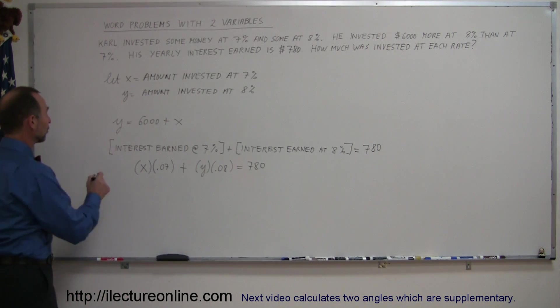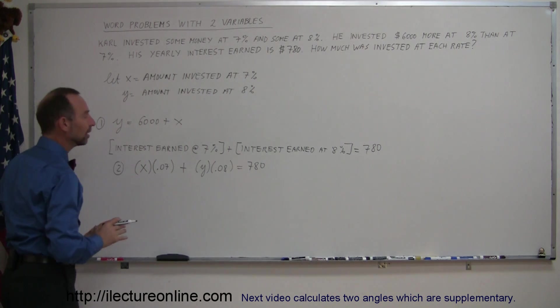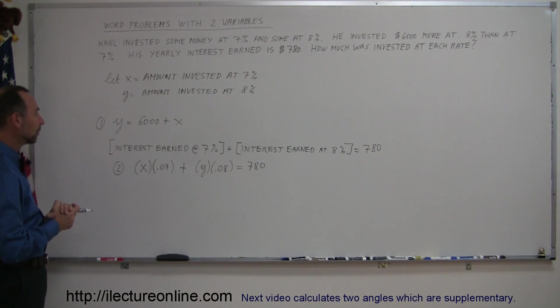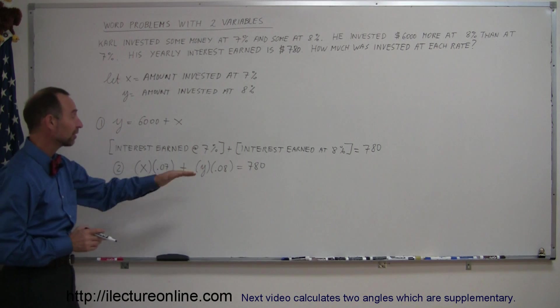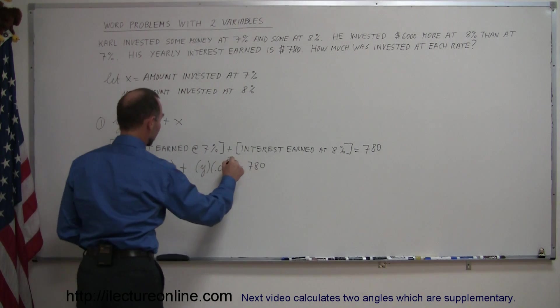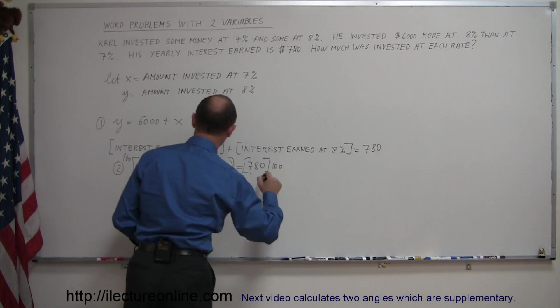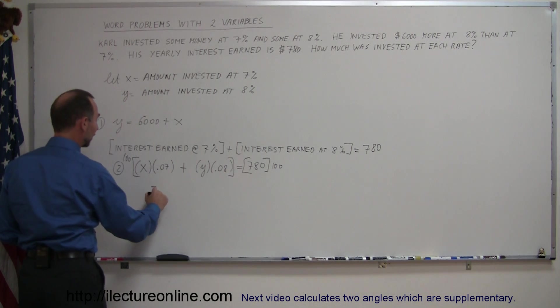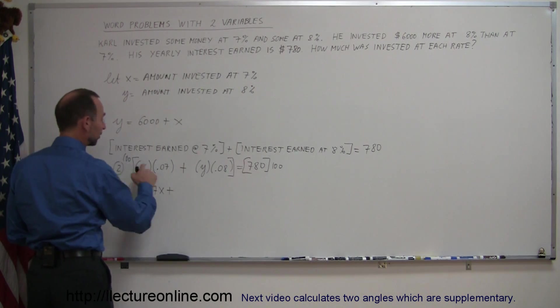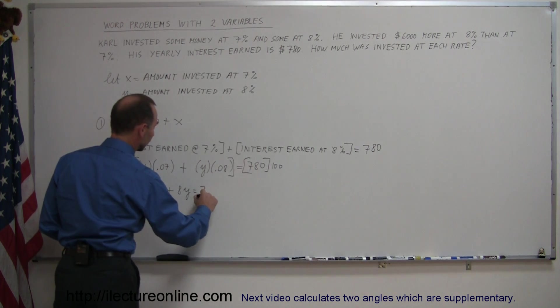So now I have two equations: equation number 1 and equation number 2, and I can solve those simultaneously to find the answer. Before I do anything with equation number 2, I would like to get rid of the decimal places. I'm going to multiply both sides of the equation by 100 to get rid of those decimal places. So we can say that 100 times 0.07 is 7, so 7x, plus 100 times 0.08 is 8, so plus 8y equals this with two more zeros, 78,000.